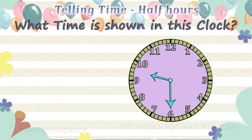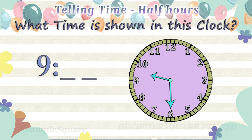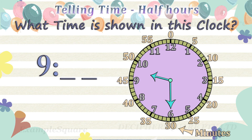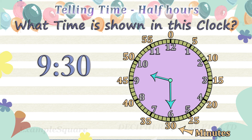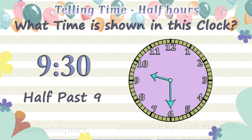What time is shown in this clock? The short hand, that is the hour hand, is pointing in between nine and ten, so the time is nine hours and some minutes. The long hand, that is the minute hand, is pointing at six — the minute hand is referring to thirty minutes. The time shown here is half past nine, or nine thirty.